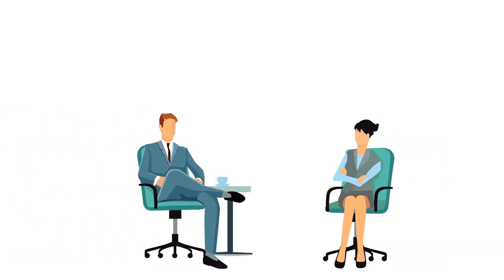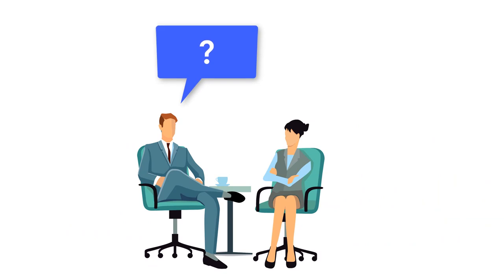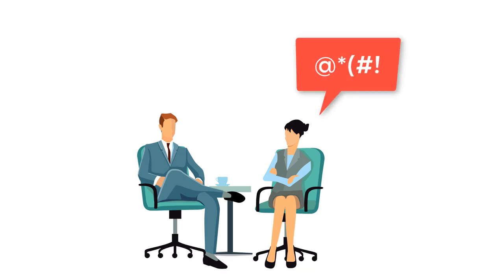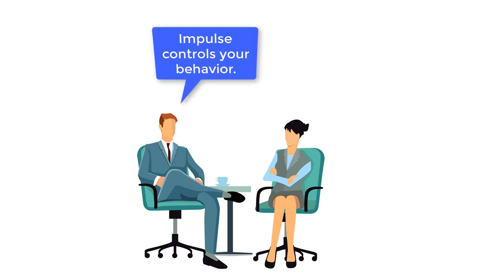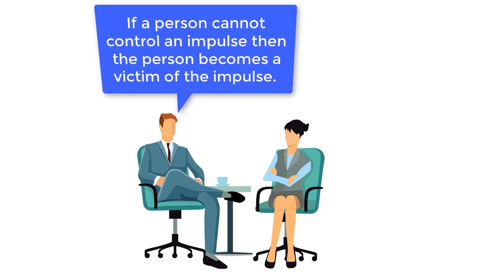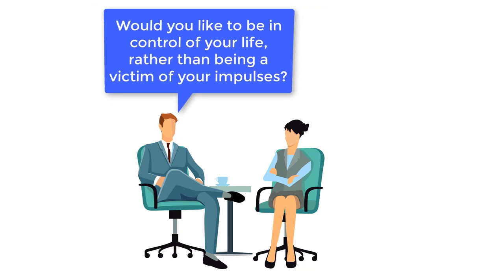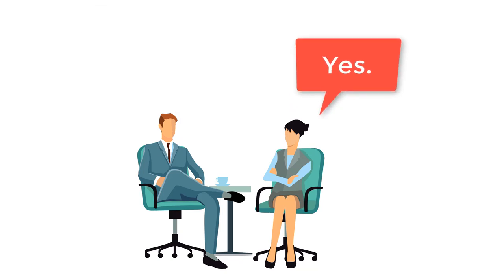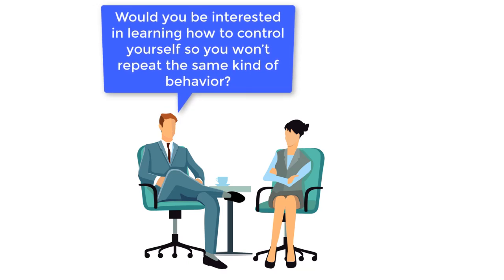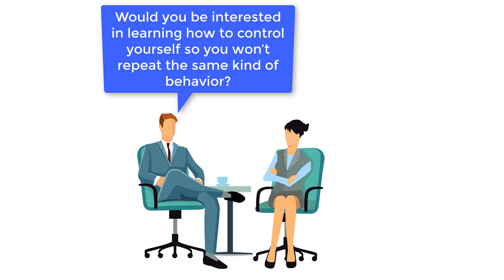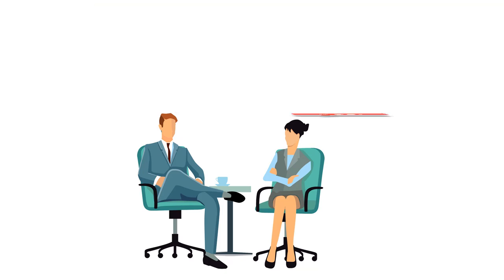I started the meeting by asking the student what was the situation that brought her to the office. Alicia, not a real name, replied that she had called someone a bad name. I mentioned that it seemed to me that her impulse of being unkind to a fellow student controlled her behavior. I explained that if a person cannot control an impulse, then the person becomes a victim of the impulse. I asked her if she would like to be in control of her life rather than being a victim of her impulses, and she answered yes. I then asked if she would be interested in learning how to control herself so she wouldn't repeat the same kind of behavior, and she answered yes.